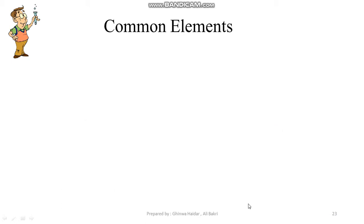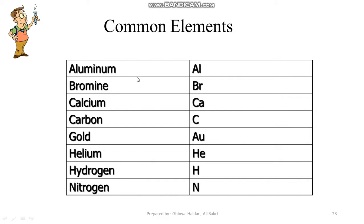Each element has its own special symbol. Some common elements that we see in daily life are aluminum, bromine, calcium, carbon, gold, helium, hydrogen and nitrogen.